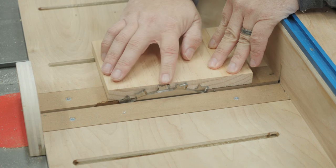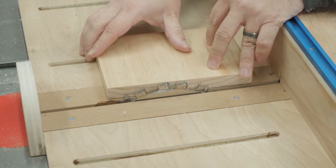The final step is to set your blade height to match the thickness of your stock. I actually like to set it just a tiny bit above so I can plane the fingers nice and flush when I'm finished.